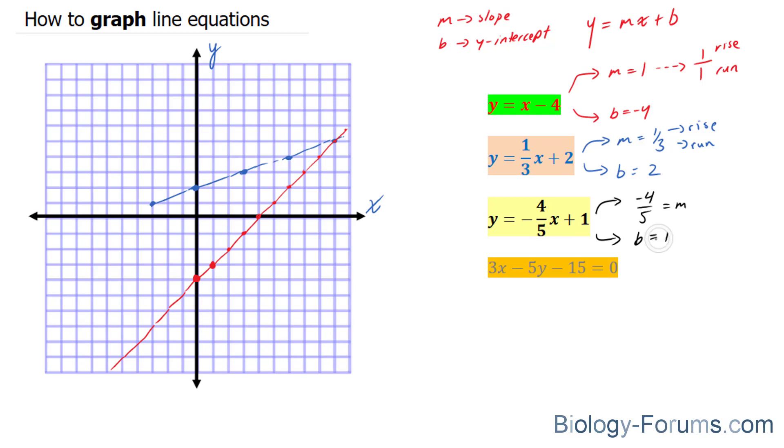We're going to start off by plotting 1 right there. And this negative 4 suggests that we're going to be rising negative 4, which means we're going to be going down 4, and then going to the right 5. So, this is our next point. I'm going to do one more just for good measure.